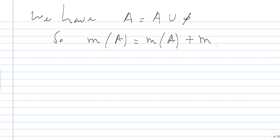Finally, we have A, which is equal to A union the empty set. They are disjoint. So the measure of A is going to be equal to the measure of A plus the measure of the empty set. Since everything here is finite, then this will force M of the empty set to be equal to zero, as claimed.